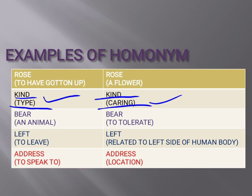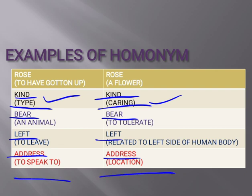Next example: 'bear' — the way you pronounce it is same and the spellings are also same, yaani inke naam same hain. Bear ka ek matlab hai an animal, aur doosra bear ka matlab hai to tolerate (bardaasht karna). Similarly, 'left' — both spellings are same and pronunciation is also same, but they differ in meaning. Ek left ka matlab hai to leave (chhod jaana), aur doosra left aapke human body ka left side. Address — spellings same, pronunciation same, but different in meaning: to speak to, and location.